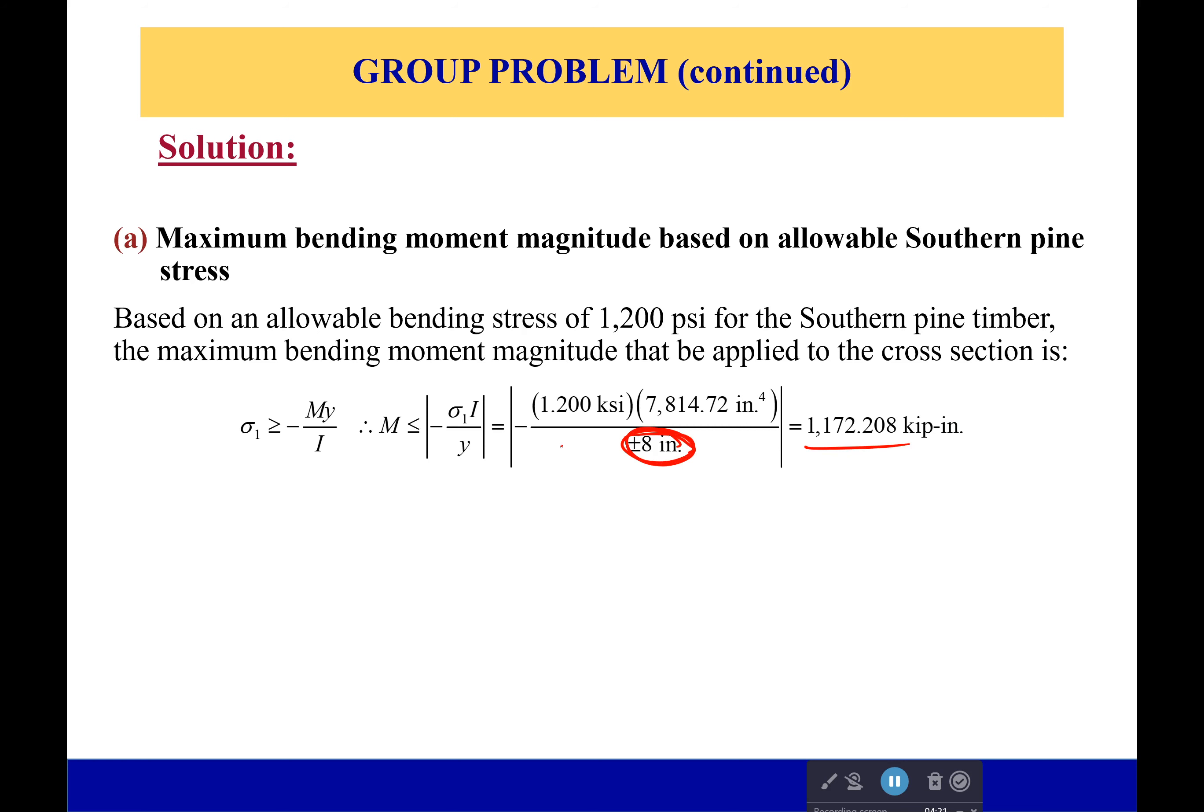It's always the edge. That's where you're going to find the maximum bending stresses. Always. With your little diagram, it always looks like something like this. The big end of the triangle is always far away from the neutral axis.